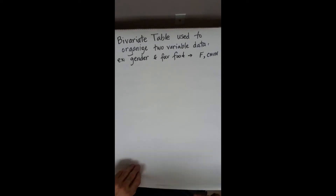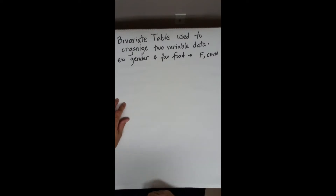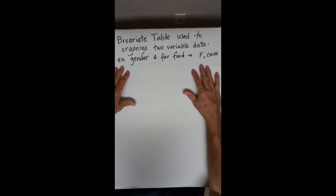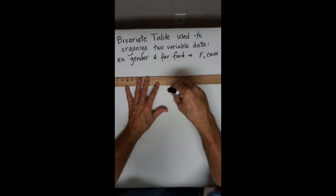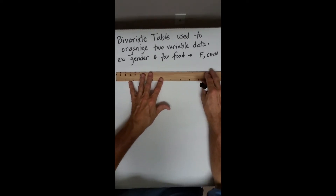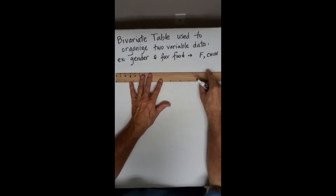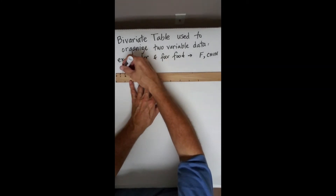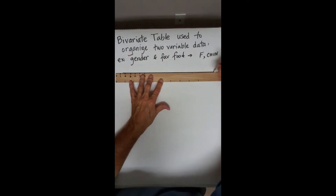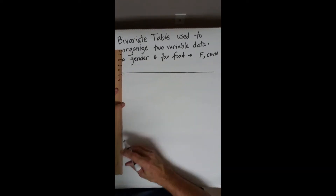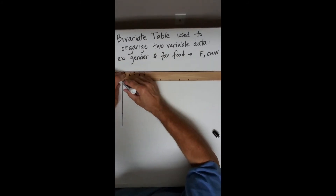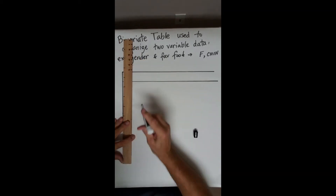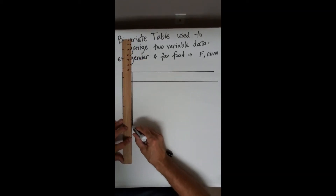Now you have two variables, so we need to change our table because the previous table designs will not work. We're going to pretend we already have our data collection and put it into a table. The table has to be a rectangular box — like in Excel — with rows and columns.